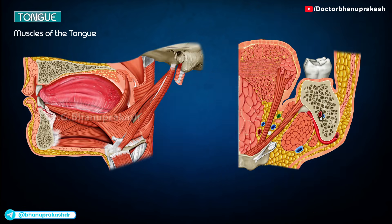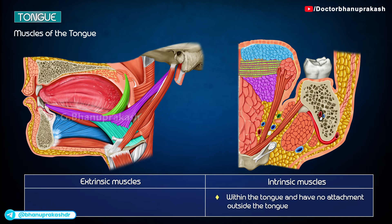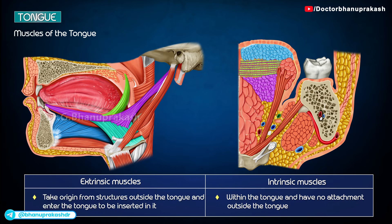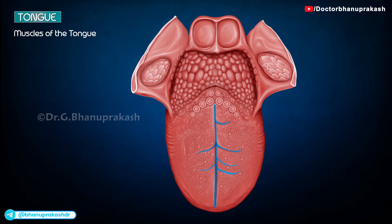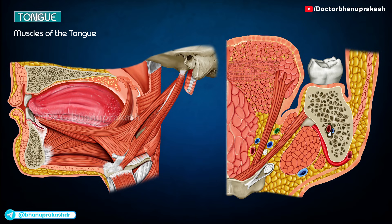The musculature of the tongue consists of both extrinsic and intrinsic muscles. The intrinsic muscles are embedded in the tongue and have no attachment outside the tongue, whereas extrinsic muscles take origin from structures outside the tongue and insert into it. The intrinsic muscles change the shape of the tongue, while the extrinsic muscles move the tongue — protrusion, retraction, and side-to-side movements — as well as alter its shape. Each half of the tongue contains four intrinsic and four extrinsic muscles.